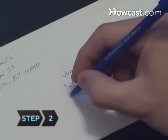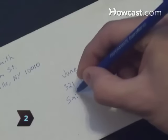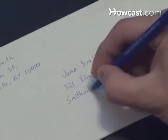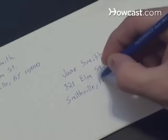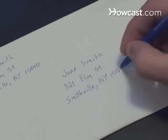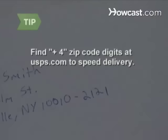Step 2. Write the recipient's information in the center of the envelope. Write their name on the first line, street address or post office box on the second line, and city, state, and five-digit zip code on the third line. Adding the additional plus-four digits to the zip code, found at USPS.com, will speed delivery.